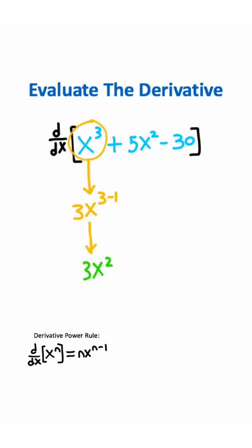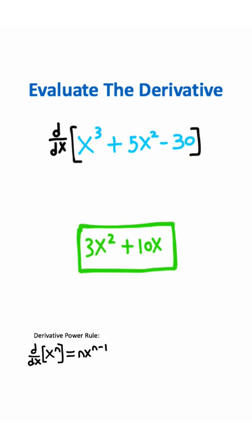Well you can use the power rule on each one of these terms to give you 3x squared plus 10x, and then the derivative of 30 is just going to be 0 because any time you have the derivative of a constant it's going to give you 0. So this is going to be the answer right here.